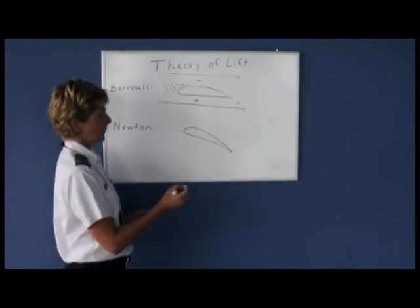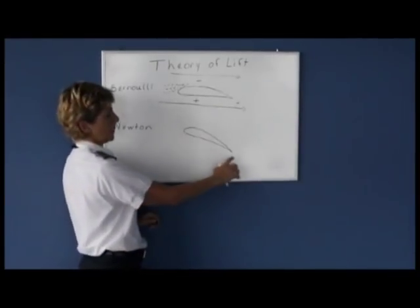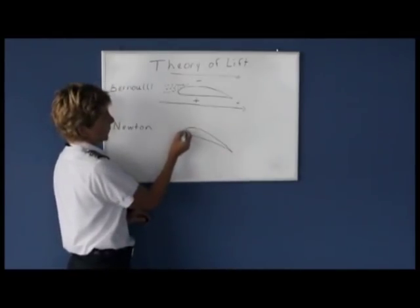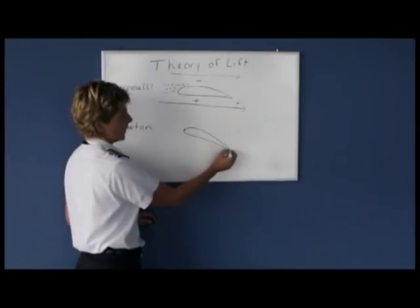A few terms that we have to learn: this is the leading edge of the wing, and this would be the trailing edge of the wing. If we drew an imaginary line from the leading edge to the trailing edge, we call that the cord line.